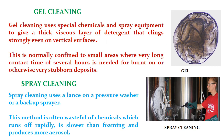Gel cleaning uses special chemicals and spray equipment to give a thick viscous layer of detergent that clings strongly even on vertical surfaces. It is normally confined to small areas where a very long contact time of several hours is needed for burnt-on or otherwise stubborn deposits. Spray cleaning uses a lance on a pressure washer or a backpack sprayer, but this method is often wasteful of chemicals which run off rapidly, is slower than foaming, and produces more aerosol.